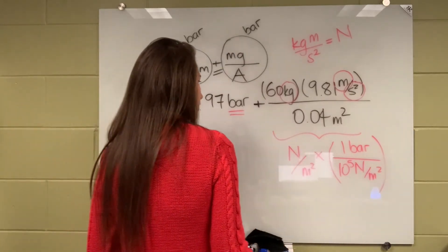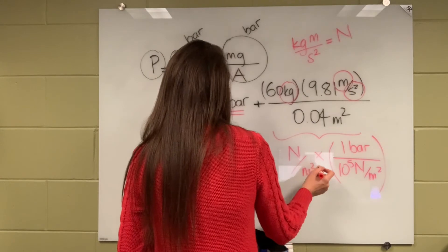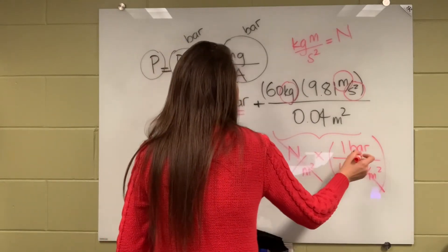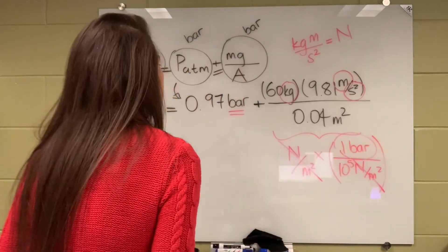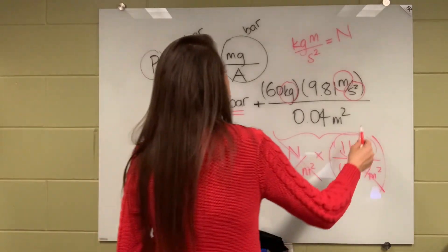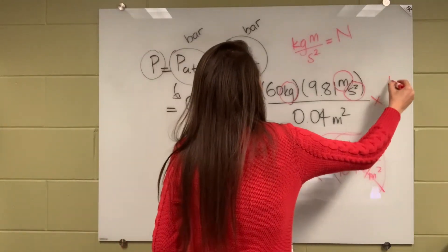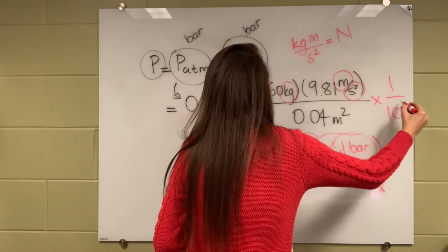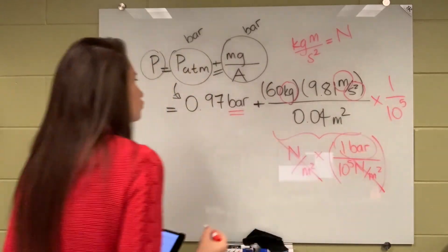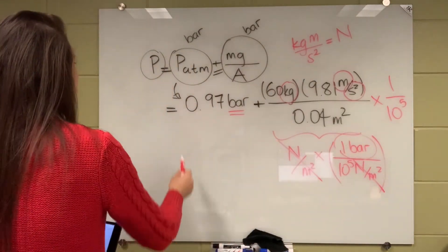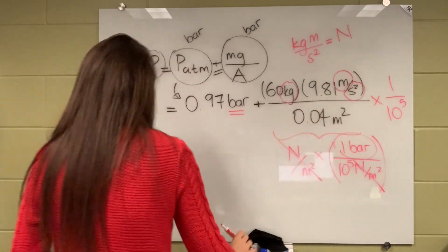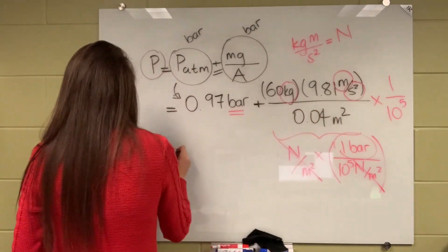That is, one bar is actually equal to 10 to the power of 5 Newton per meter squared. This way, you get rid of these and the unit left is bar. Therefore, overall, you need to multiply this with that to convert it to bar so that you can sum those terms up.